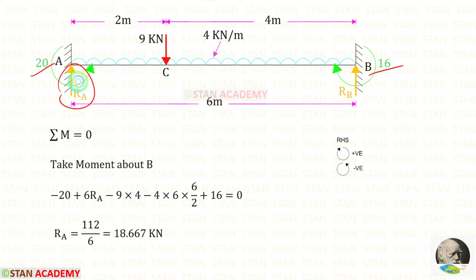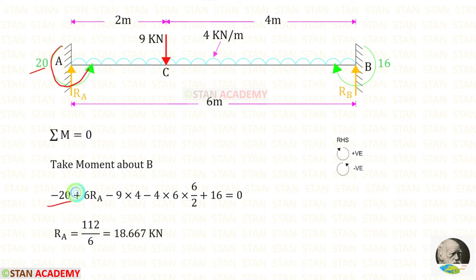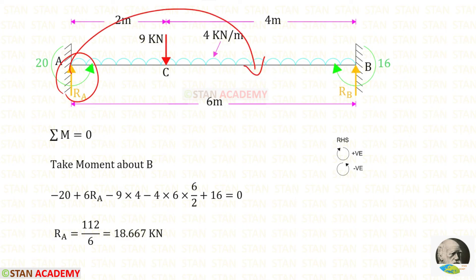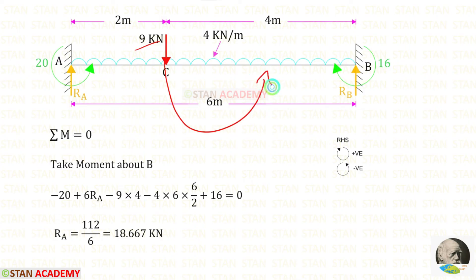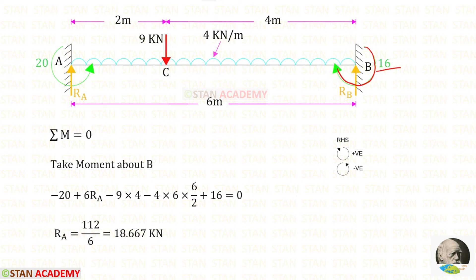Now we are going to find the vertical reactions RA and RB in the fixed beam. First let us find RA by taking moment about B, moving towards the right — clockwise positive, anti-clockwise negative. MA is anti-clockwise, so negative. RA is clockwise, positive, at distance 6: giving 6RA. The point load 9 kN is anti-clockwise, negative, at distance 4. The UDL 4 kN/m is also anti-clockwise, negative. MB is clockwise, positive. Finally, RA is 18.667 kN.